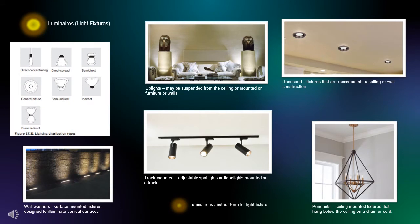Light fixtures can be chosen to complement the architecture and to emphasize architectural features and patterns. Decorative fixtures can enhance the interior decor as well. Wall washers are surface-mounted fixtures designed to illuminate a vertical surface. Up lights may be suspended from the ceiling or mounted on furniture or walls. Recessed lights are fixtures that are recessed into a ceiling or wall construction. Track-mounted lights are adjustable spotlights or floodlights mounted on a track and can be moved or aimed in a particular direction. Pendant lights are ceiling-mounted fixtures that typically hang below the ceiling on a chain or cord. The term luminaire is just another term for light fixture.